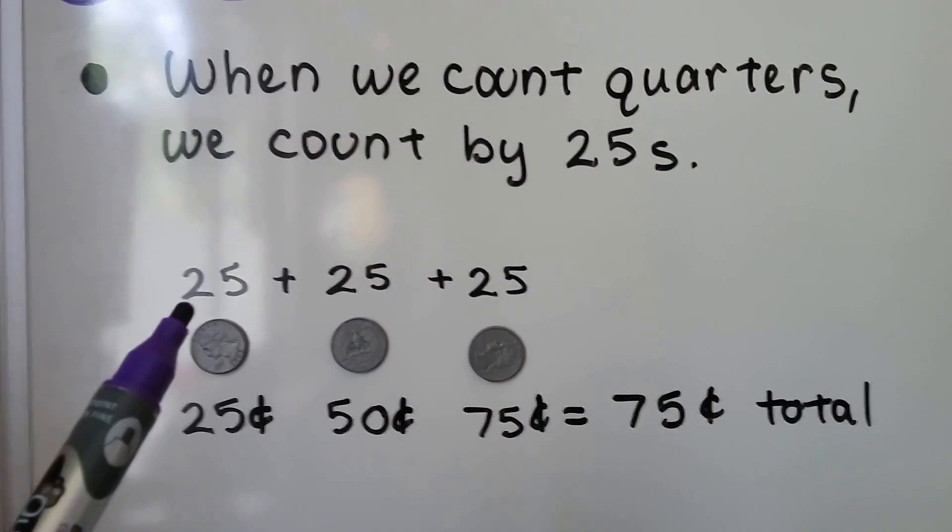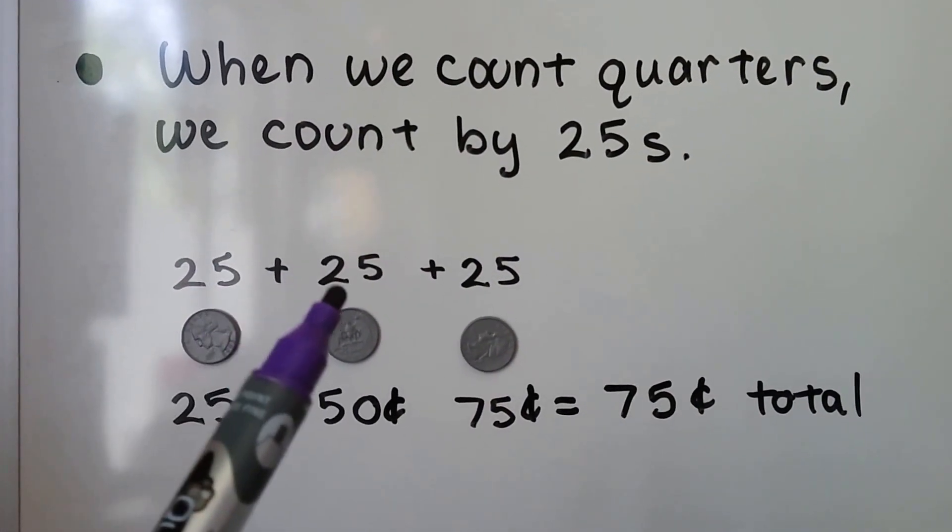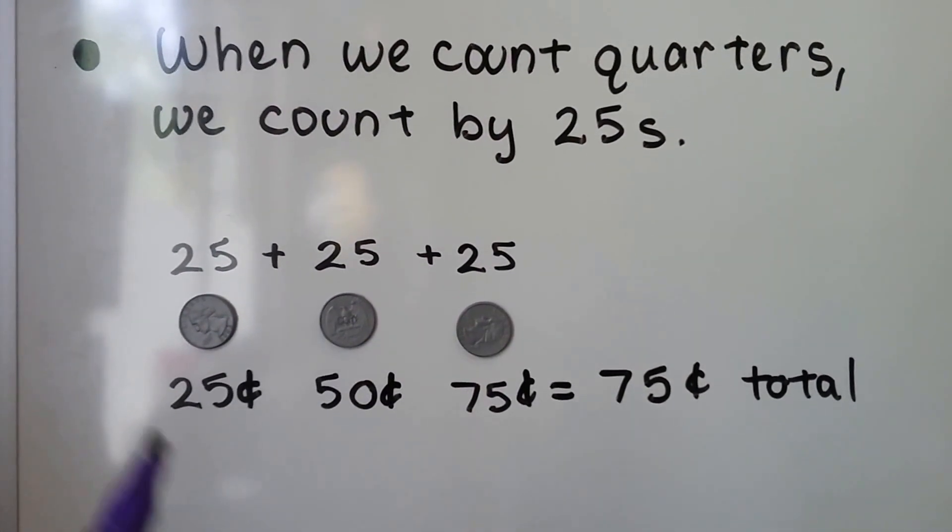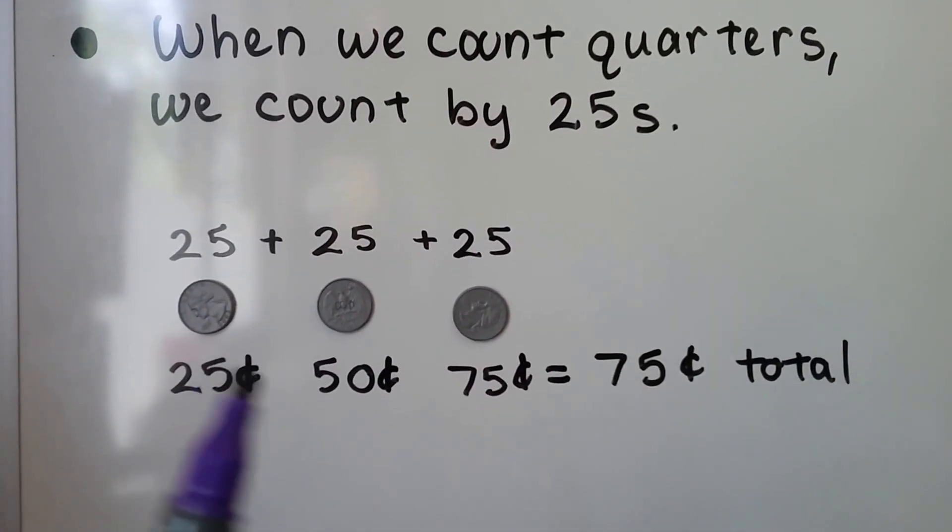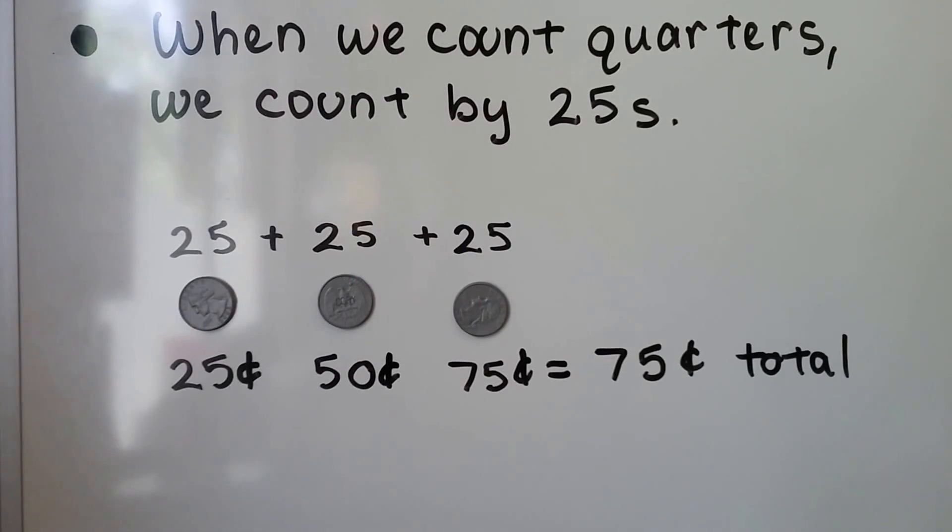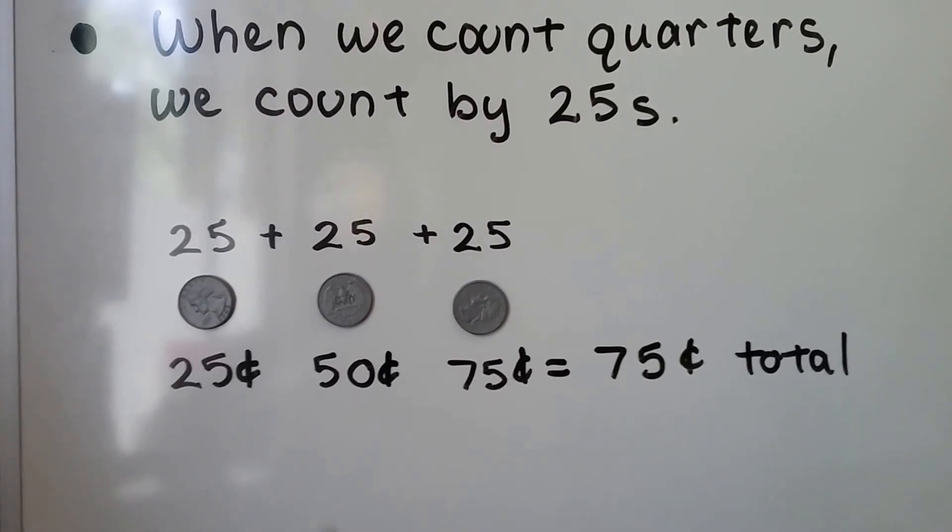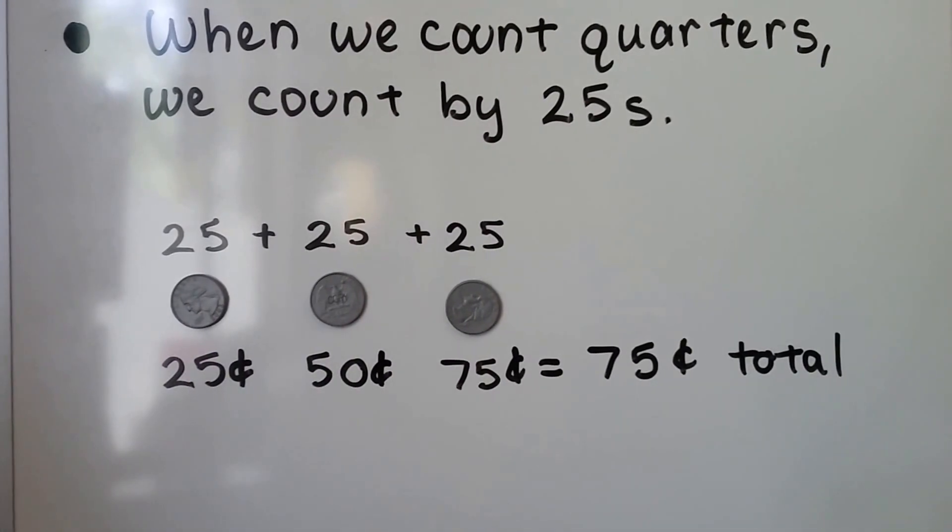Each quarter is 25 cents. That would be 25 plus 25 plus 25. We say 25 cents, 50 cents, 75 cents. If you can remember these three numbers, you can count by 25s. Three quarters is 75 cents total.